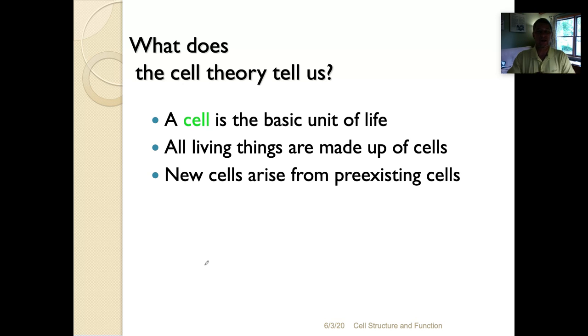So one of the major theories in science is called the cell theory, and the cell theory has three major parts. First, it states that a cell is the basic unit of life—in other words, all living things are made up of cells, whether they are unicellular organisms like bacteria and protists or multicellular organisms like fungi, plants, and animals. The third and final point of the cell theory is that new cells arise only from previously existing cells. In other words, cells don't spontaneously come into existence; they have to have a parent cell. We'll talk about the reproduction of cells later on in the course, but for now it's enough to know that cells must come from a previously existing cell.